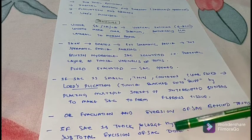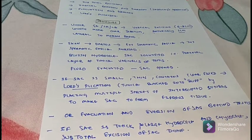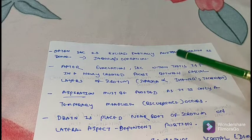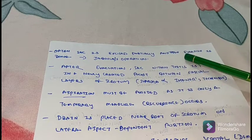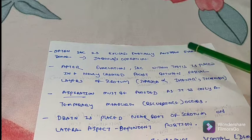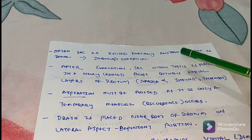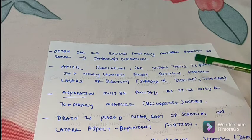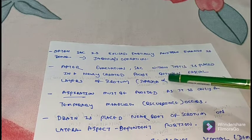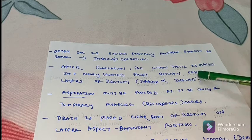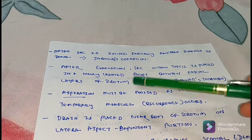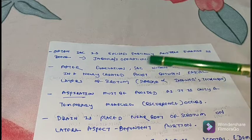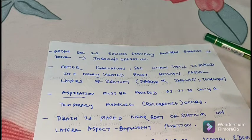Often the sac is excised partially and then eversion is done — that is the Jaboulay operation. After evacuation, the sac with the testis is placed in a newly created pocket between fascial layers of the scrotum — that is the Sharma and Jarvis technique. Aspiration must be avoided in hydrocele as it is only a temporary measure, as recurrence occurs.